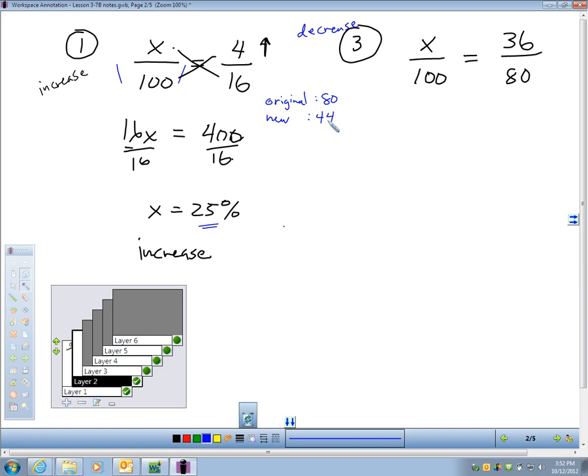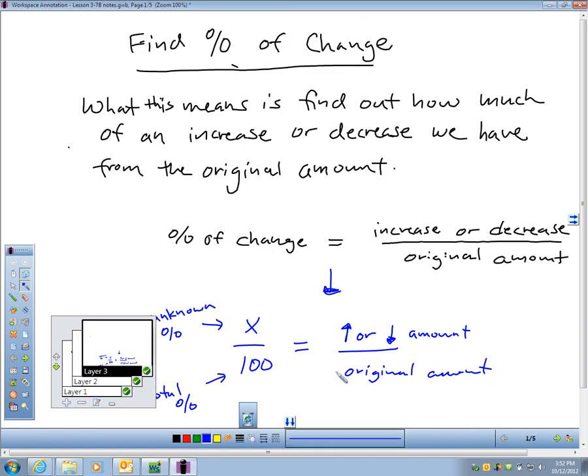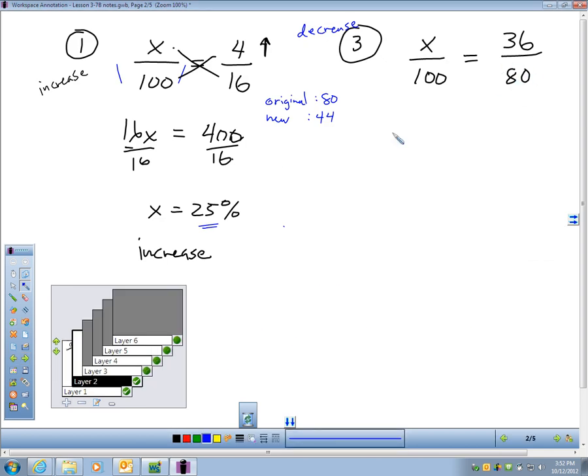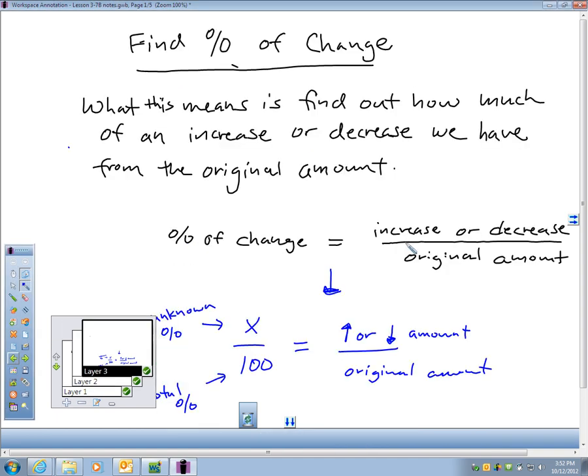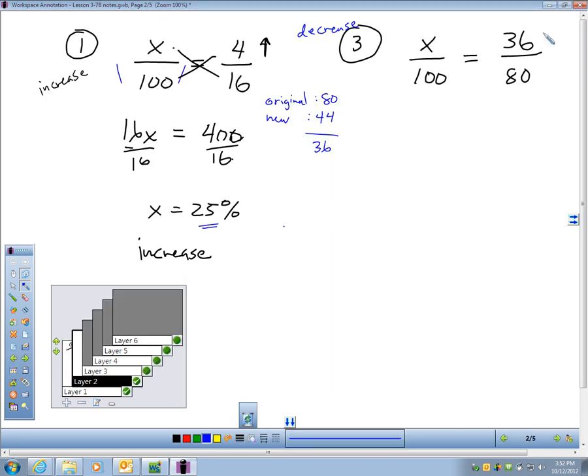So I'm going to set up a proportion. First of all, my original amount, remember, let me go back a slide. The original amount is always in the denominator of this division. So the original amount is 80. Now my change, we went from 80 to 44. When you think of change, that's a subtraction. That's 36. We decreased 36. So that goes in the numerator. Remember, the increase or decrease goes in the numerator. We decreased 36. I guess I put a little arrow going down. And that decrease of 36 out of 80 would equal what percent out of 100?